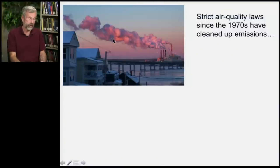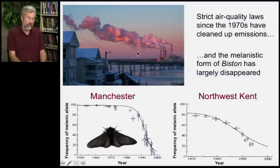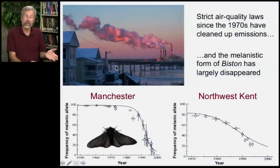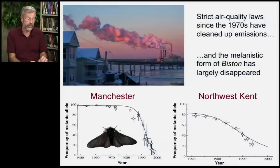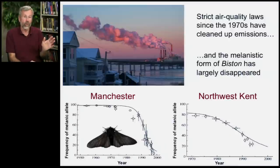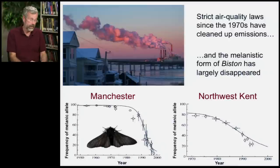So this is no longer black soot — this is just steam on a cold day. The trees and tree trunks are no longer being colored black by the soot, and walls of buildings are no longer turning black.